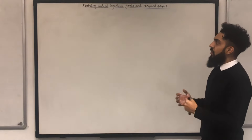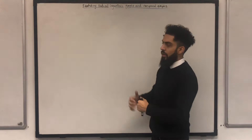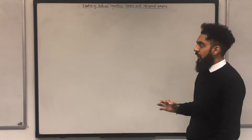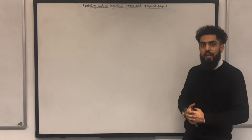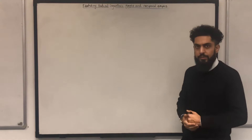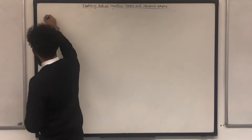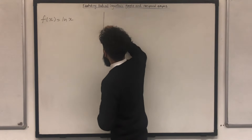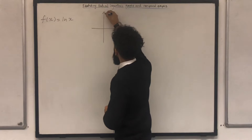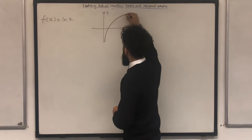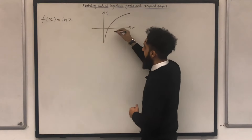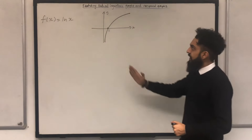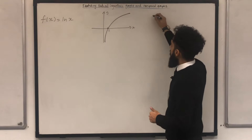In this video tutorial, I'll be looking at sketching natural logarithmic graphs and reciprocal graphs. Let's start off with the concept of sketching natural logarithmic graphs. I'm going to start with the function f(x) = ln(x) and sketch its graph. The x-intercept is at 1, and the equation of the vertical asymptote — the y-axis — is x = 0.